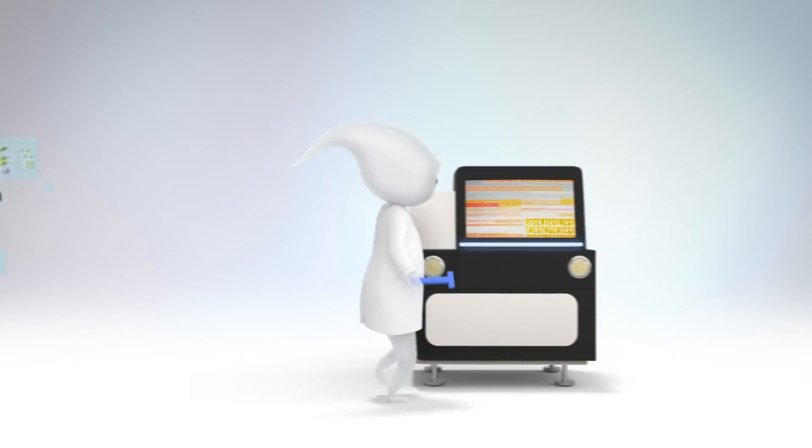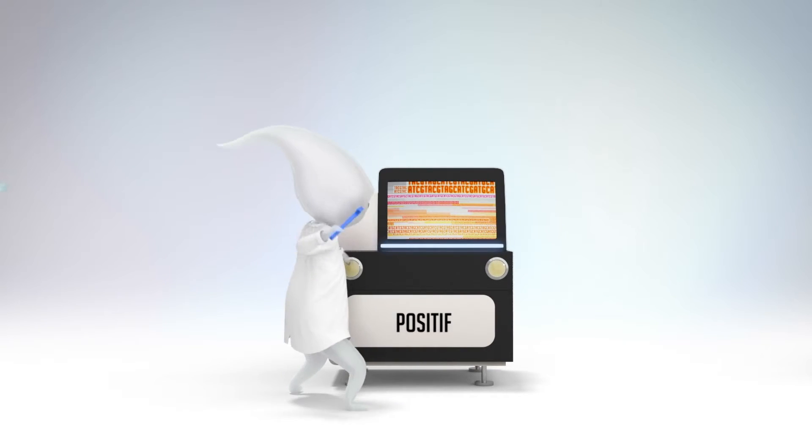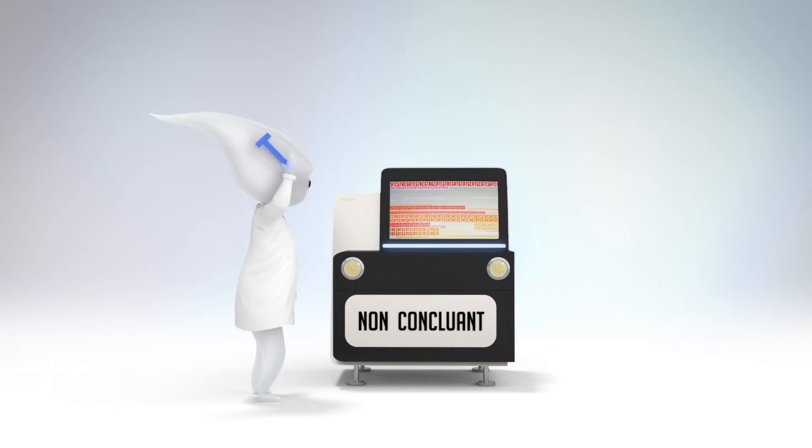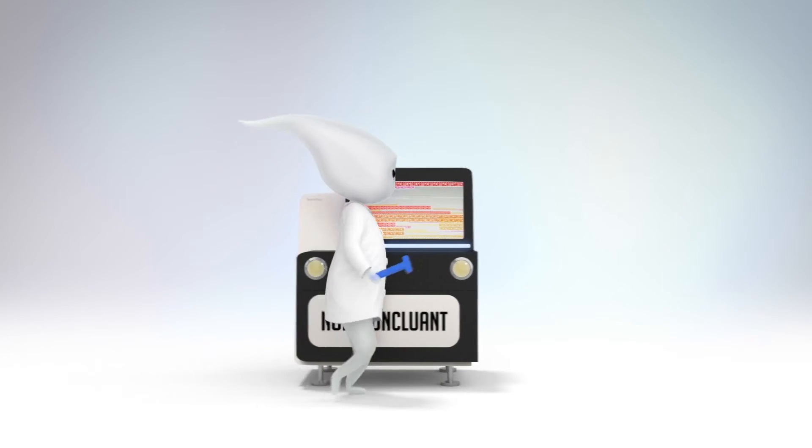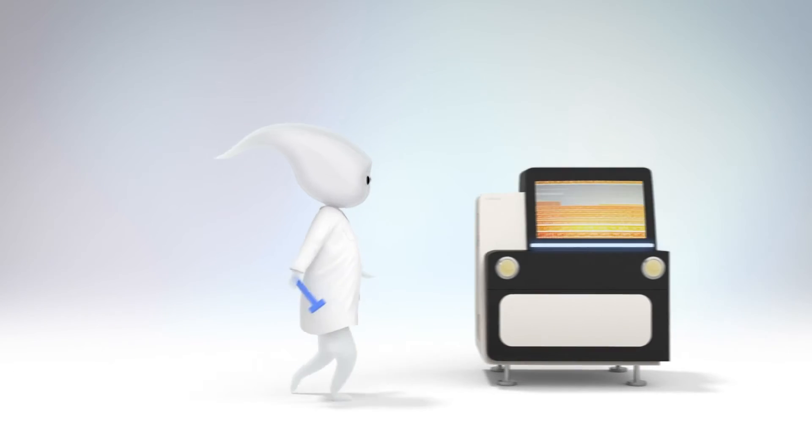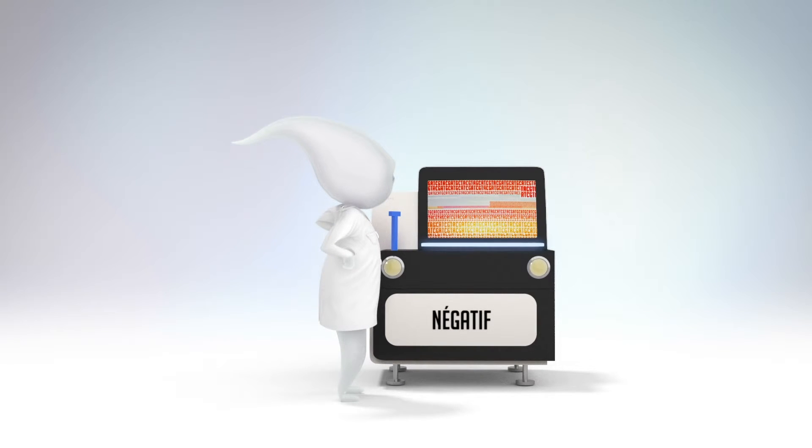De façon générale, trois résultats sont possibles pour la maladie concernée. Il sera positif après l'identification définitive ou hautement probable de la cause de la maladie. Non concluant, dans le cas d'une identification de variations génétiques candidates où la causalité reste incertaine. Un tel résultat pourrait mener à des investigations supplémentaires susceptibles de le faire évoluer en fonction de l'avancement des connaissances scientifiques. Enfin, il restera négatif s'il se confirme l'absence apparente en l'état actuel des connaissances scientifiques de la cause de la maladie étudiée.